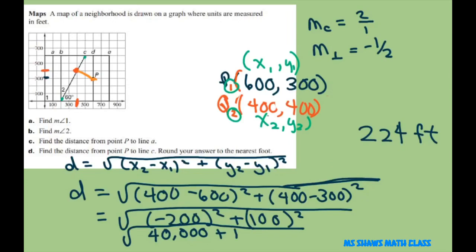And this is really 10,000. So it would be the square root of 50,000, which gives you that answer.